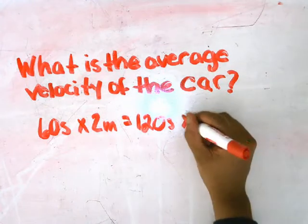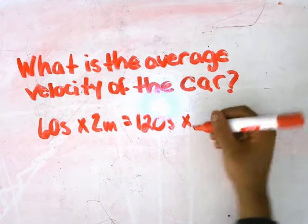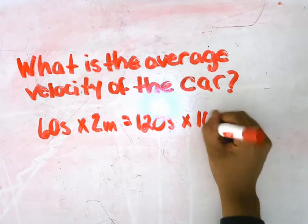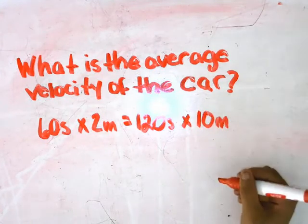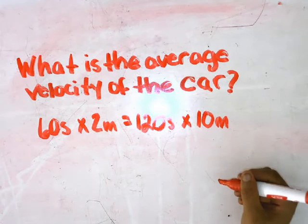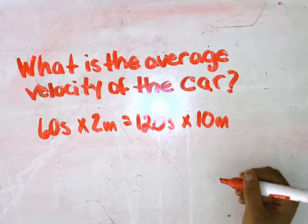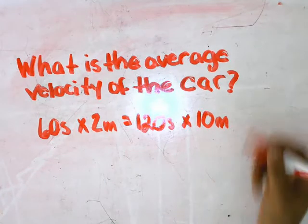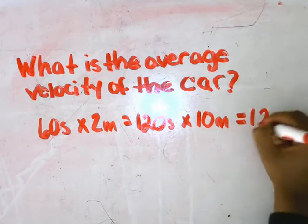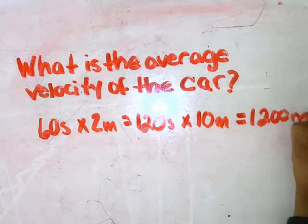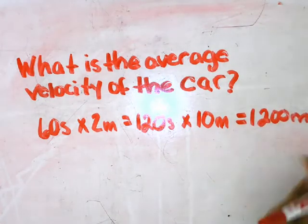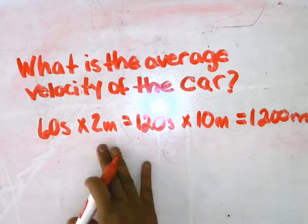You're going to multiply 120 seconds times 10 meters per second, because the car is traveling at a rate of 10 meters per second for 2 minutes, which is going to equal 1,200 meters the car is traveling within 2 minutes.